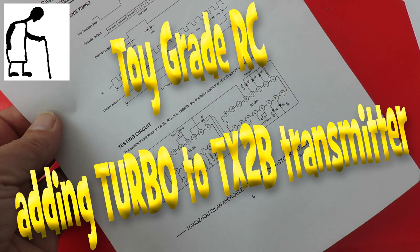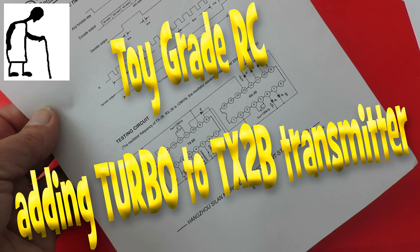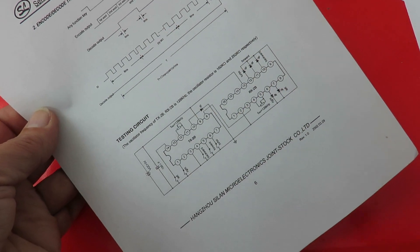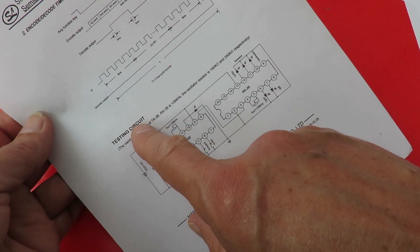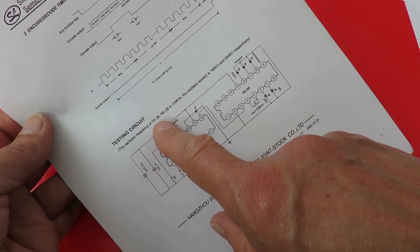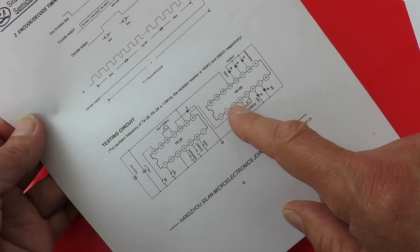Hi guys. In a previous video, which I'll put a link to in the video description, I built up a circuit so I could try out this testing circuit for the TX-2B and RX-2B transmitter and receiver controller chips.